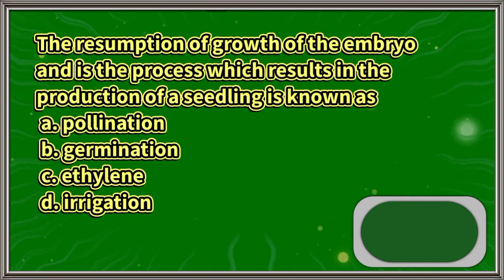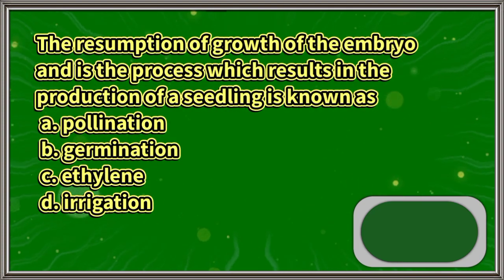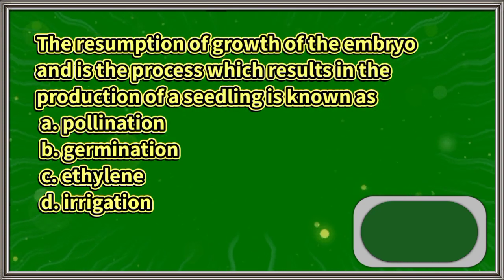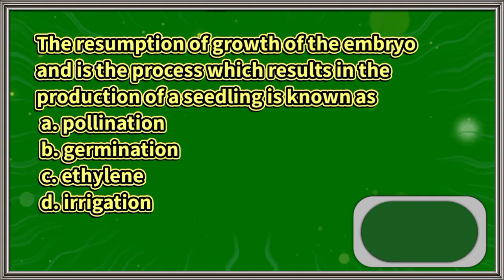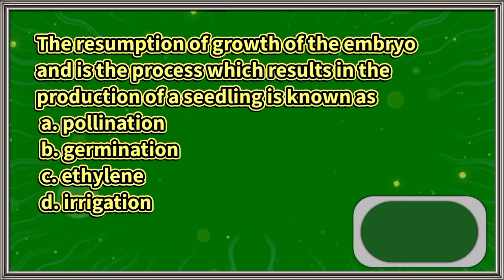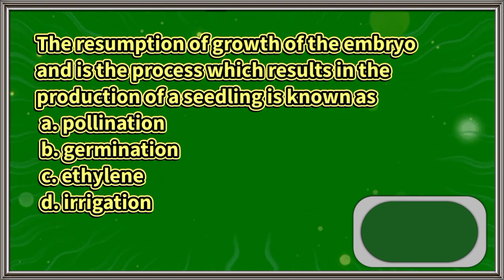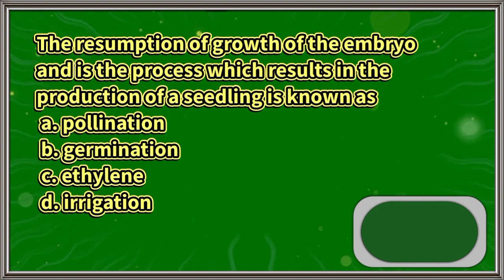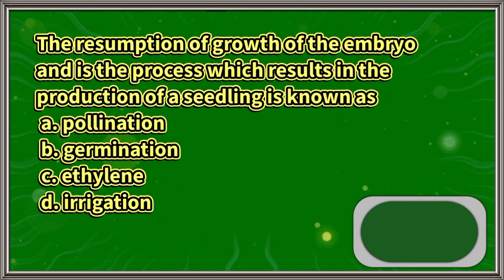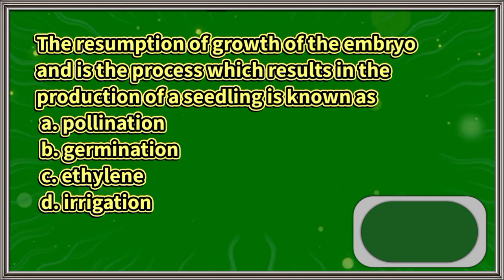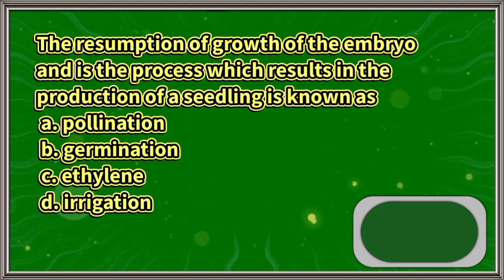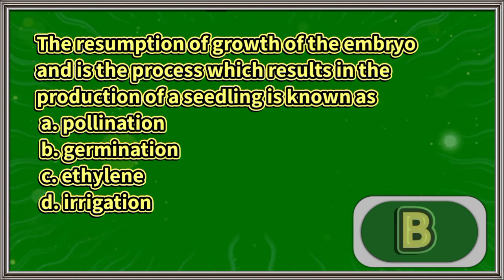The resumption of growth of the embryo, and the process which results in the production of a seedling, is known as: A. Pollination. B. Germination. C. Ethylene. D. Irrigation. The answer is letter B.